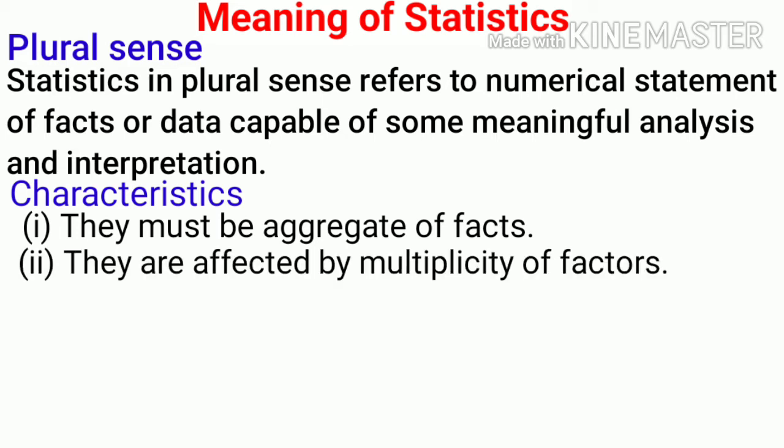Second is they are affected by multiplicity of factors. There are several factors that affect phenomena. The statistics of production of rice are affected by rainfall, quality of soil, seeds and manure, method of cultivation, etc. The data relating to such phenomena is called statistics.